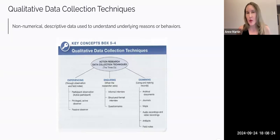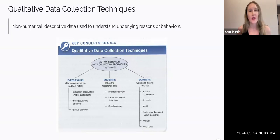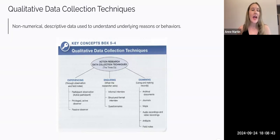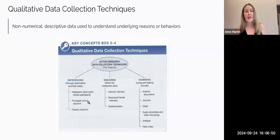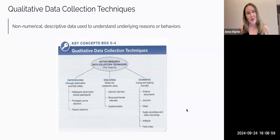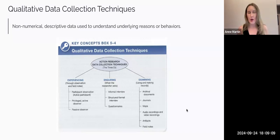The first category is experiencing data sources — these are collected through observation. Mills talks about a few different types of observation and helpful suggestions about different purposes. Think about which method you'd use: participant observation, privileged observer, or passive observer, and why. Then think about what is going to guide that observation. Inquiring is when the researcher asks — it could be an informal interview, ethnographic interview, structured formal interview, a focus group, or an open-ended questionnaire.